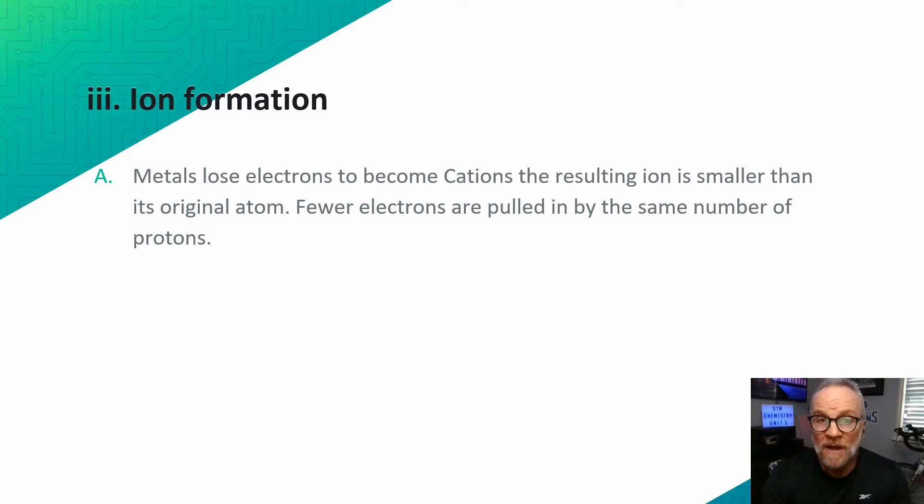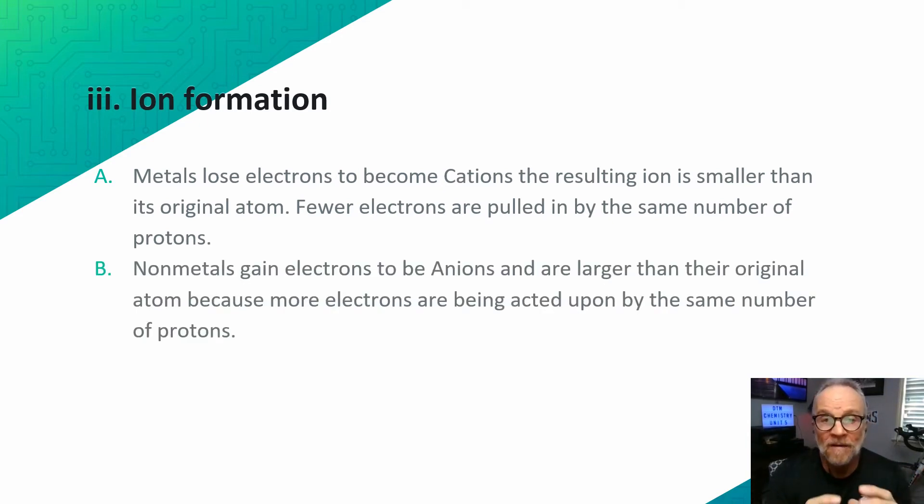Metals lose electrons and become cations. The resulting ion is smaller than its original atom. Fewer electrons are pulled in by the same number of protons. Nonmetals gain electrons and they therefore are larger than their original element.